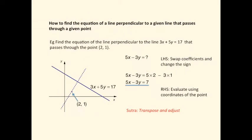A similar problem is how to find the equation of a line perpendicular to a given line that passes through a given point. I've used the same line here, 3x minus 5y equals 17 and the same point (2,1), and we're looking for the equation of this perpendicular. This can be done in pretty much one step using the Vedic technique of transpose and adjust.